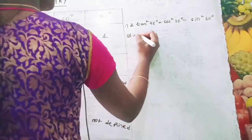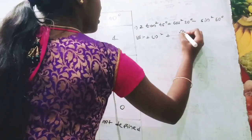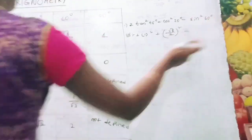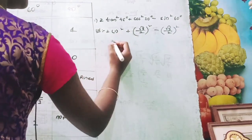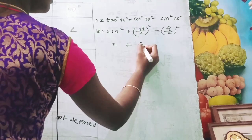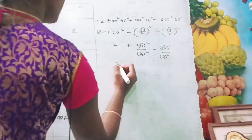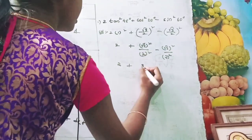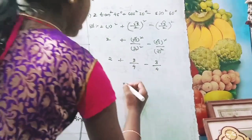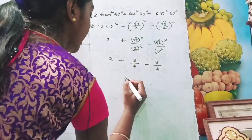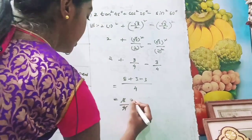Now we have to solve this problem: tan²45° + cos²30° - sin²60°. Tan 45° = 1, so 1² = 1. Cos 30° = √3/2, so (√3/2)² = 3/4. Sin 60° = √3/2, so (√3/2)² = 3/4. The expression becomes 1 + 3/4 - 3/4. LCM is 4, giving 4/4 + 3/4 - 3/4 = 4/4 = 1. So the value is 1.